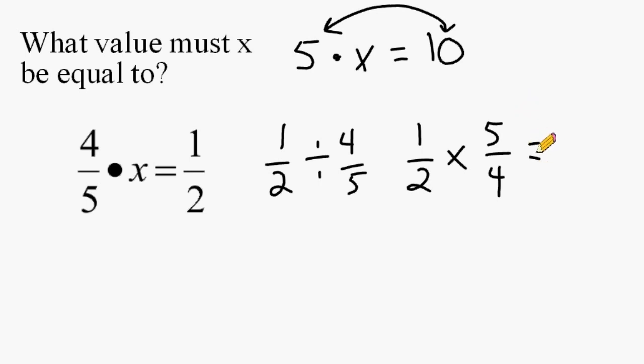The next thing that we do is multiply our numerators straight across, 1 times 5 is 5, and the product of the denominators is 8, and we cannot reduce this fraction any further.